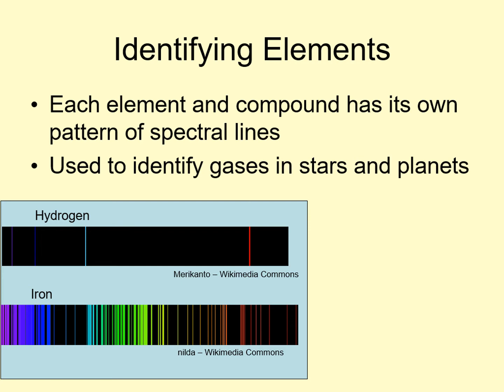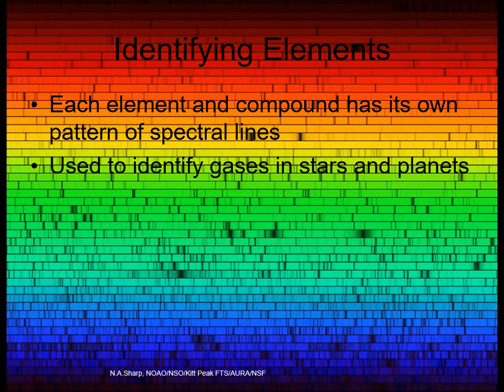When we look at the spectrum of an object, one of the most important things we can learn is the object's composition. Have a look at this spectrum of the sun. It's been spread out incredibly long, so they've had to split it up into dozens of smaller pieces just so that they could fit it onto a page. Each of the dark vertical bands is an absorption line, produced by the gases in the sun's and the Earth's atmospheres. As you can see, there are hundreds of lines here, produced by numerous chemical elements. We call the study of spectra this way spectroscopy.